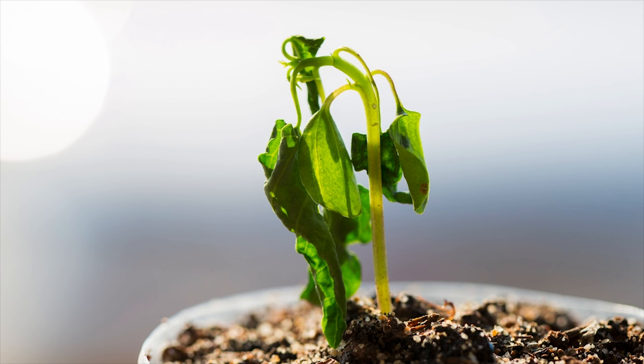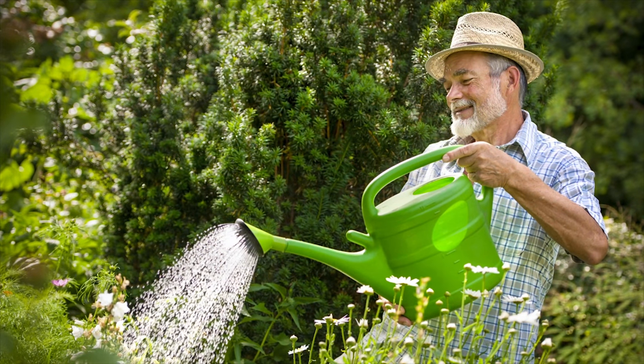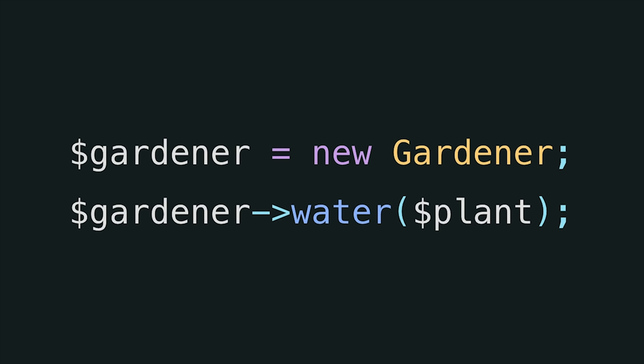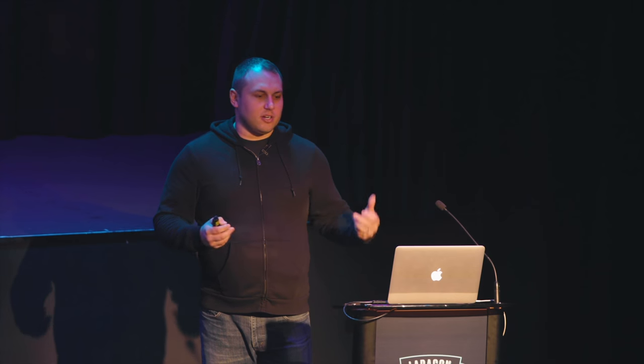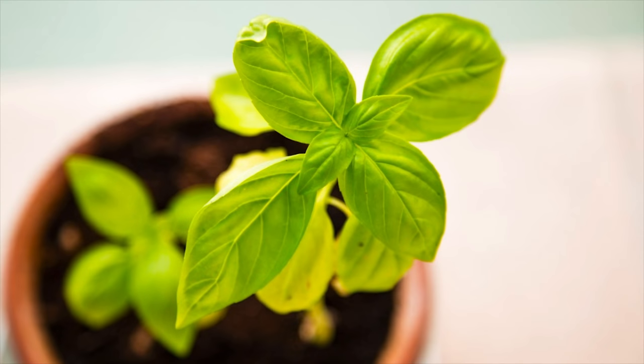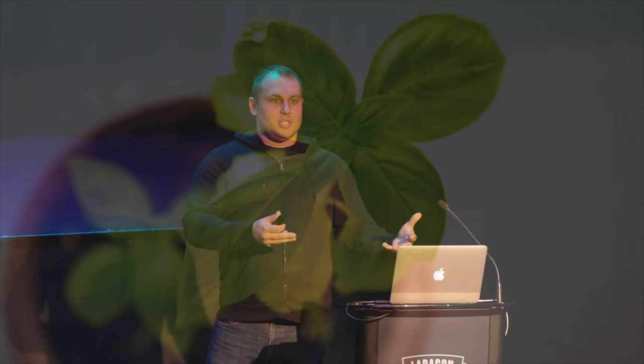The approach I've always taken up until some of the ideas in this talk was: I would think to myself, okay, we need to water a plant. What object can I create that has the responsibility of watering plants? What can water a plant? What has that ability? I'd think about this for a little while and then I'd have that eureka moment — a gardener! A gardener can water a plant. So how would I do this in code? I might create an instance of a new gardener class, then call the water method on the gardener, pass through the plant, and with any luck we have a beautiful, healthy plant as a result.